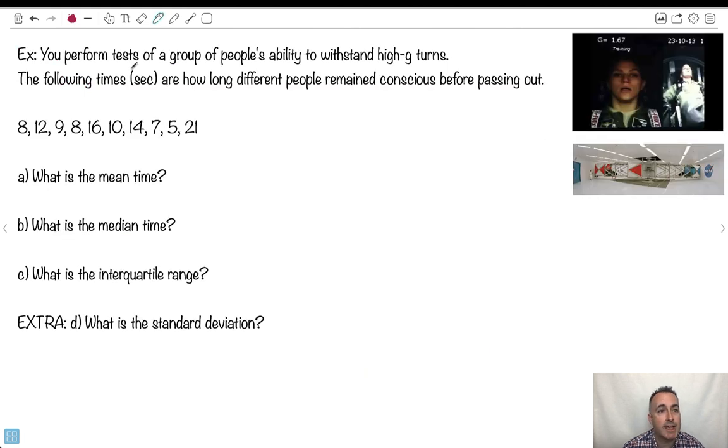So let me show you what I mean with an example here. Let's say you're doing a test. You're testing a group of people's ability to withstand high G turns. I use this as an example because I've been through this. This is super, super fun. So you go on this big crazy-looking machine here. You sit on one end of it and it spins you around faster and faster and faster.